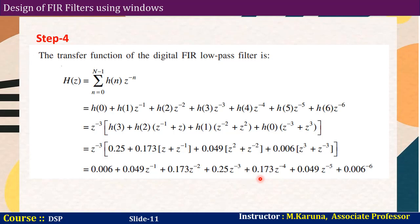So this is the final step. The steps are the same for all windows — only the window equation changes. Finally you have to find H of z. This is the transfer function H of z of the FIR low pass filter. Thank you, we will meet in the next video.